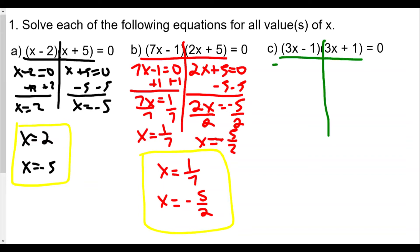Again, for C, 3x minus 1 times 3x plus 1 equals 0. We set 3x minus 1 equals 0 and 3x plus 1 equals 0. Add 1 to both sides of the first one, 3x equals 1, divide both sides by 3. x equals 1 over 3.